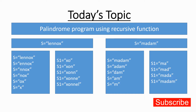A palindrome is a word which, if you read it from the left-hand side or from the right-hand side character by character, it comes out the same. For example, the word 'madam' — if you read it letter by letter, m-a-d-a-m, and from the right-hand side m-a-d-a-m — it comes down the same. Such a word is called a palindrome.